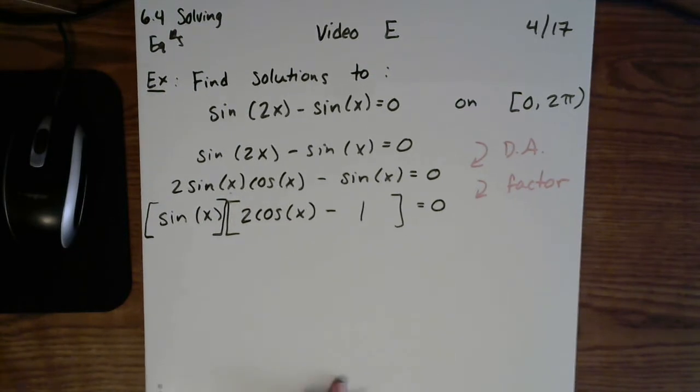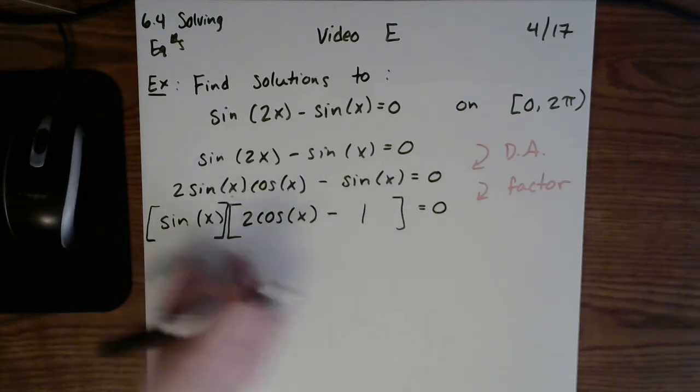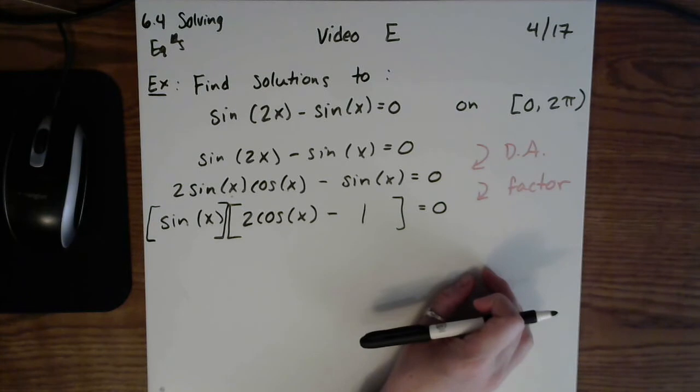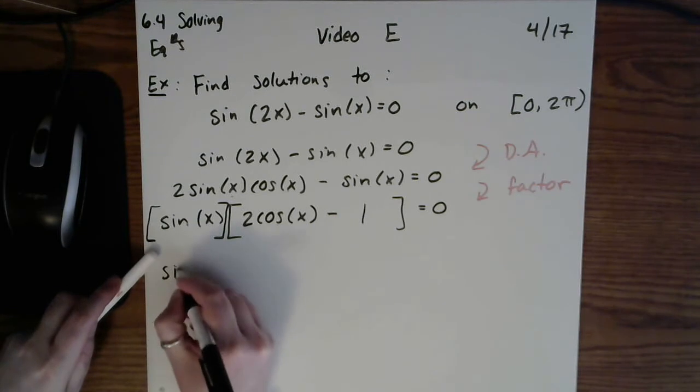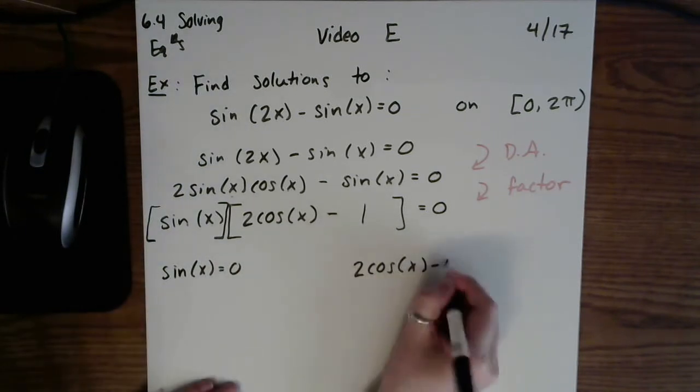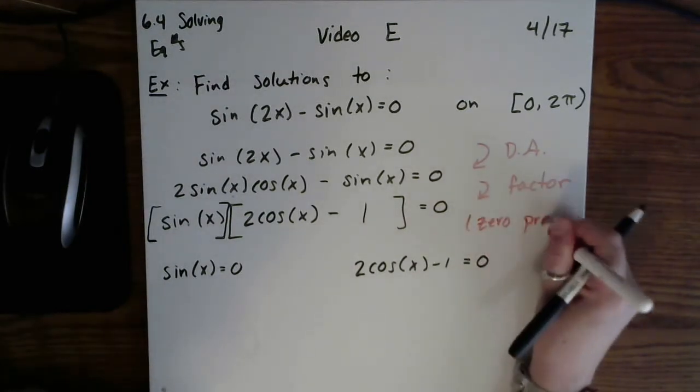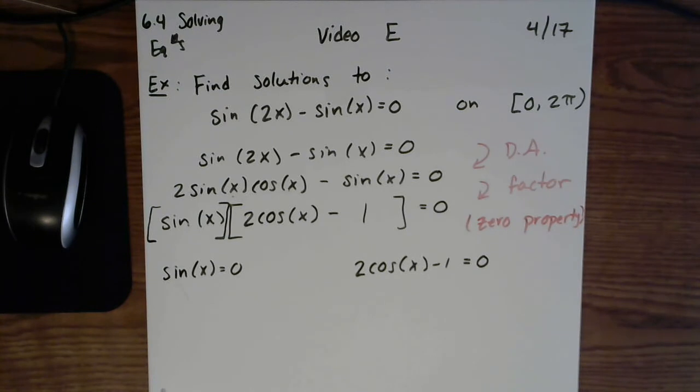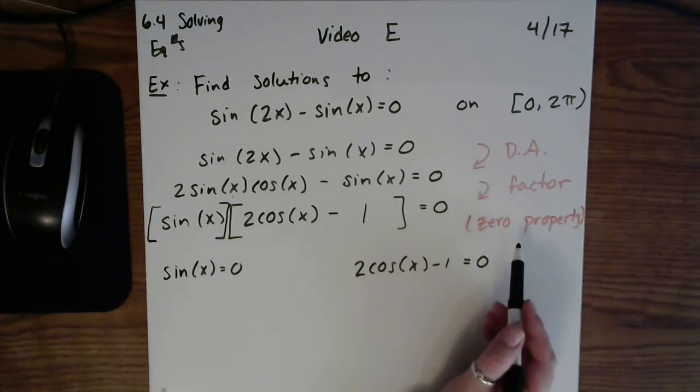In algebra, you have a property known as the zero property. And what it states is that if you have two things being multiplied together that equals zero, you break them apart and set them both equal to zero. So now I will create two equations. One from this first bracket, sin(x) = 0. One from the second bracket, 2cos(x) - 1 = 0. Maybe here I'll put a little reminder that we used the zero property. If you don't remember the zero property well, go back in your ebook or textbook and look in the index. I believe it's back in chapter two, you'll see the zero property and it will all come back to you.